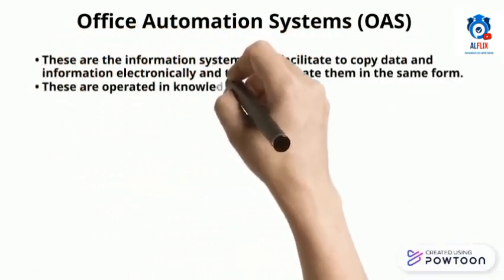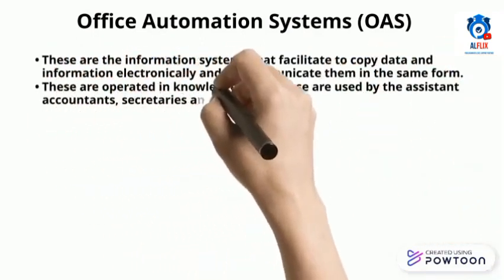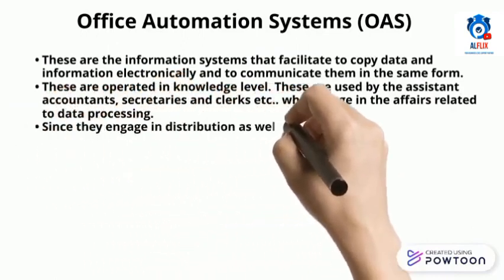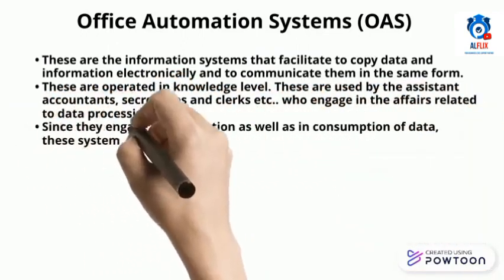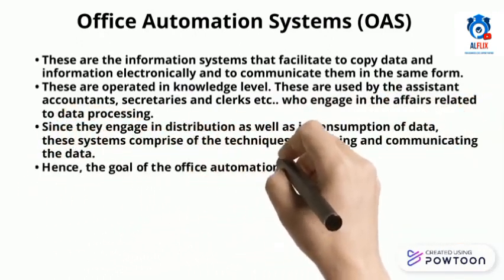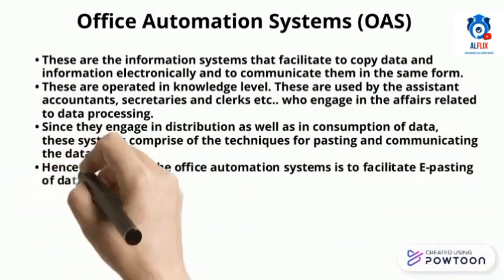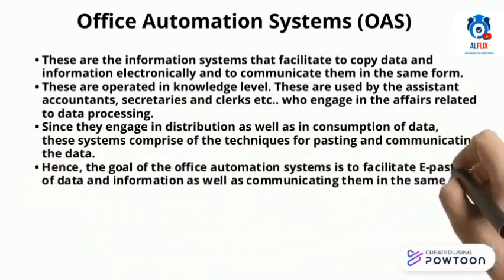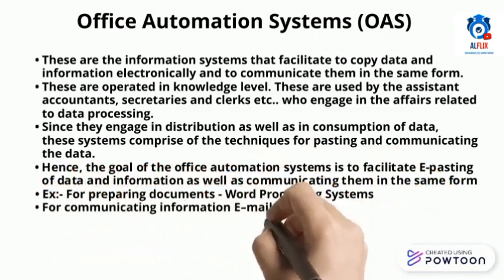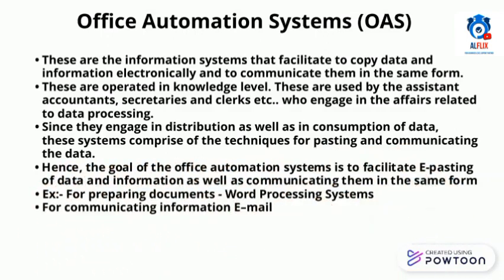Office automation systems are the information systems that facilitate copying data and information electronically and communicating them in the same form. These are operated at the knowledge level and are used by assistant accountants, secretaries, and clerks who engage in data processing. Since they engage in both distribution and consumption of data, these systems comprise techniques for storing and communicating data.